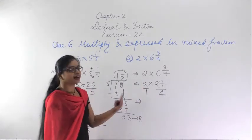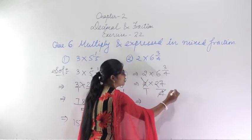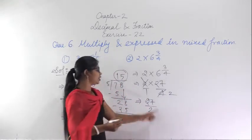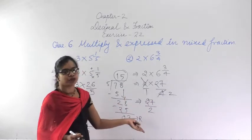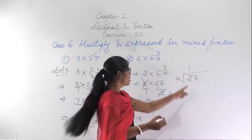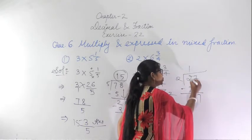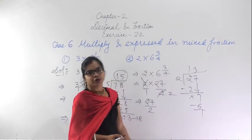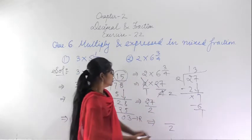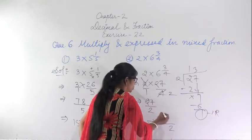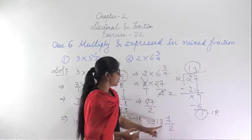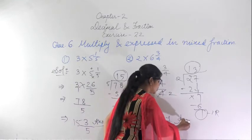Cancel the terms that can be cancelled: 2 ones are 2, 2 twos are 4 — so cancel 4 and 2, giving 27/2. We cannot cancel further, so this is the lowest form. Now convert 27/2 into a mixed fraction: 2 ones are 2, bring down 7, 2 threes are 6, remainder 1. Write in mixed fraction form: the denominator stays 2, remainder 1 is the numerator. The answer is 13 and 1/2. Verify: 13 twos are 26, plus 1 is 27 over 2.